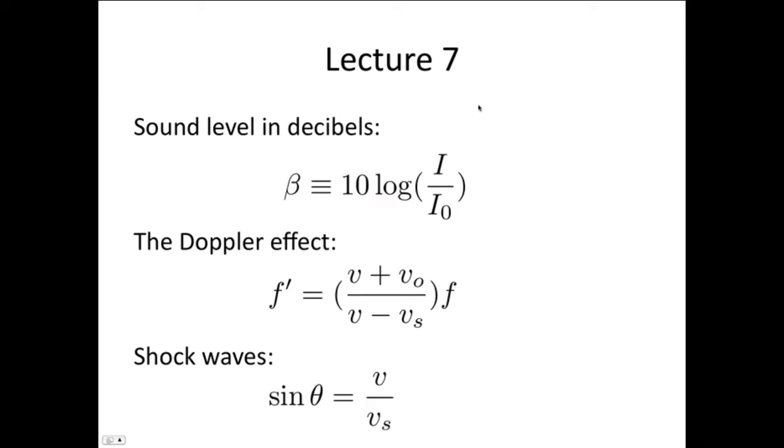In lecture 7, we looked at sound levels. We said the expression for sound levels in decibels is 10 log₁₀(I/I₀), where I₀ is the reference intensity, it's 10⁻¹², which is given to you on your formula sheet.